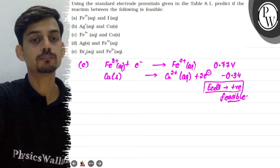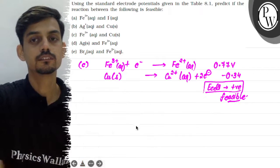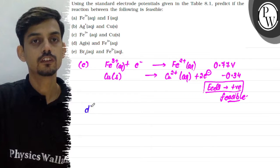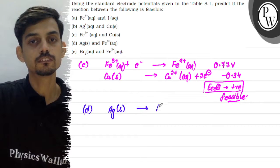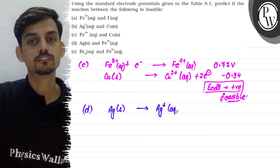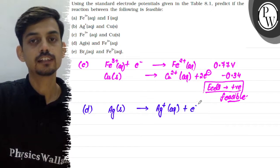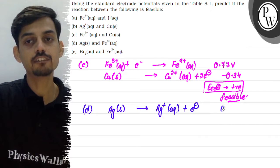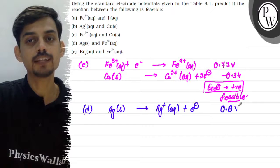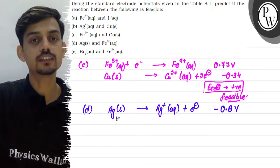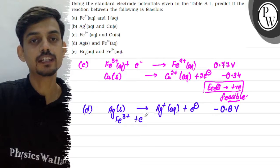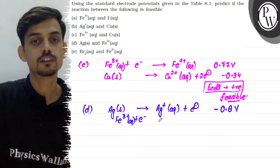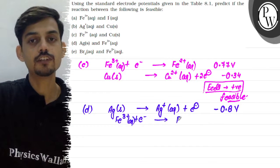Now let's check the fourth pair. So the fourth pair given to us is Ag and Fe3+. So we can have Ag ka oxidation hoga. And its reduction potential is 0.8 volt hai. So oxidation potential hoga minus 0.8 volt. And iron ka reduction hoga. Fe3+ plus electron.